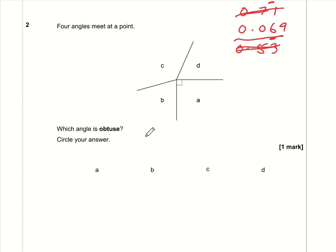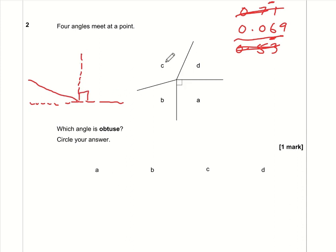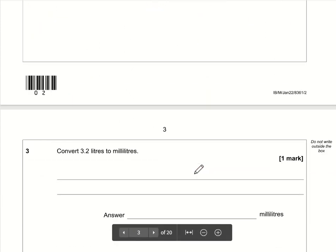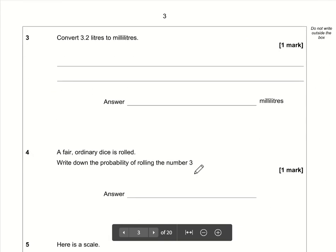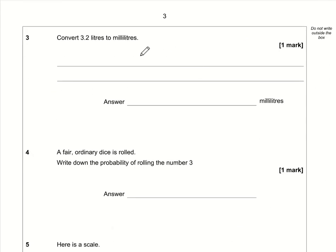Question 2: four angles meet at a point — which angle is obtuse? An obtuse angle is between 90 degrees and 180 degrees. So C is obtuse, as it is between 90 and 180. The answer is C.